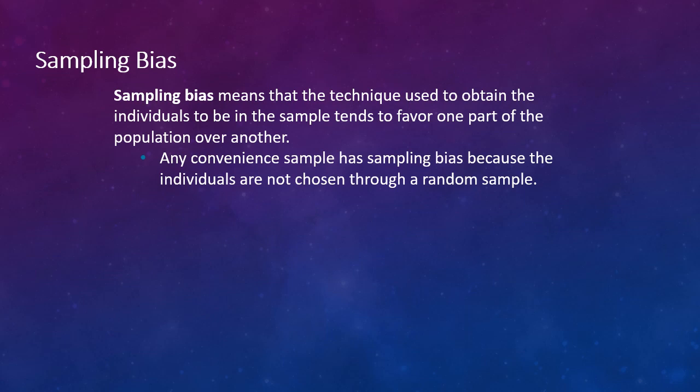Sampling bias means that the technique used to obtain the individuals to be in the sample tends to favor one part of the population over another. We've talked about convenience sampling and this has sampling bias because the individuals are not chosen through a random sample. They're typically self-selected.